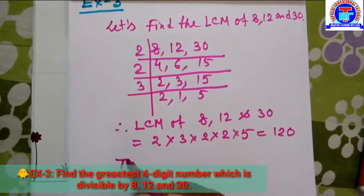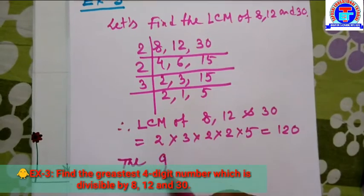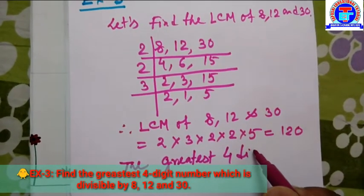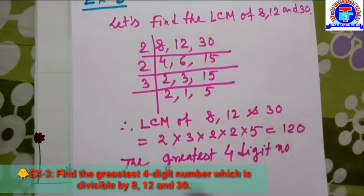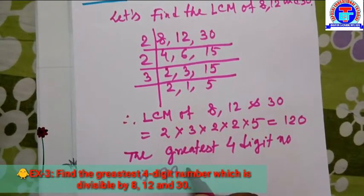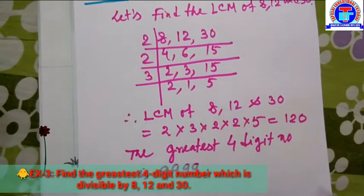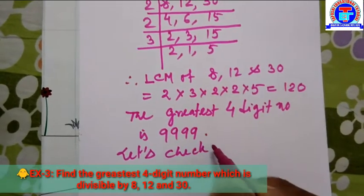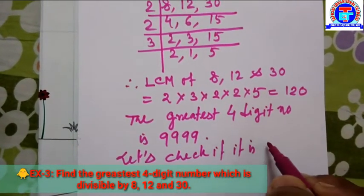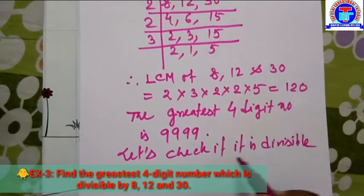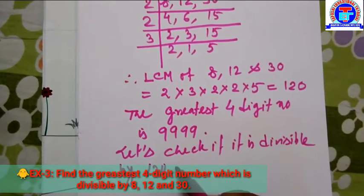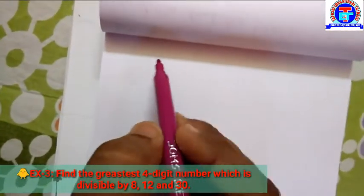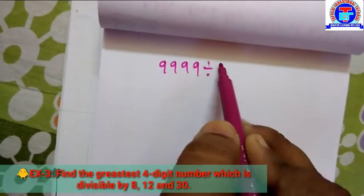The greatest four-digit number is 9,999. Let's check if it is divisible by 120 or not. We do the division of 9,999 divided by 120.